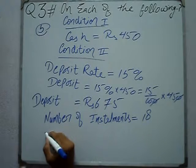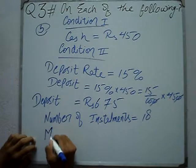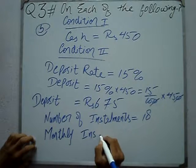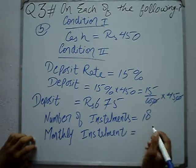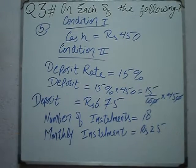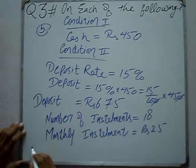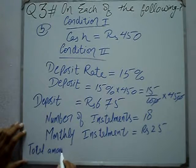How many months have been given? Monthly installments — how many months? Twenty-five months. So the total amount paid by installments is calculated by multiplying the number of installments by the monthly installment amount.